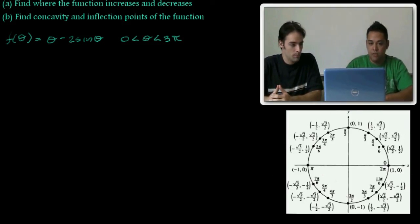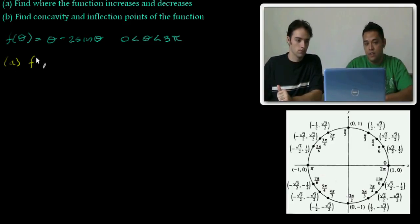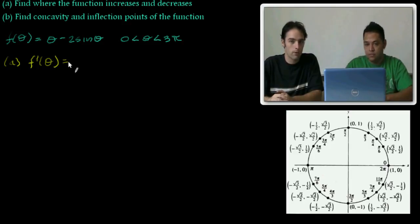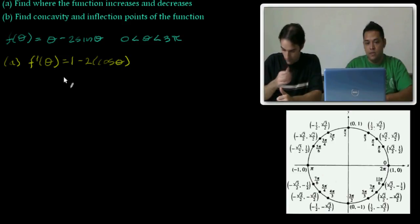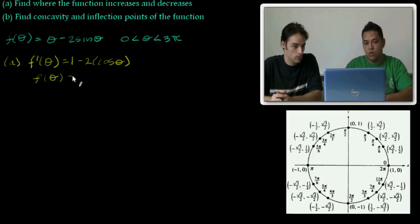For part A, I need to take the derivative, f prime of theta, which is going to be equal to? Using the coefficient rule, the derivative of theta would just be 1, minus 2 times the derivative of sine of theta, which is cosine theta.